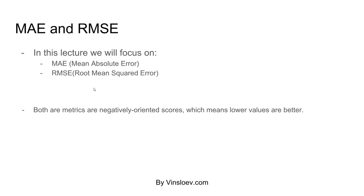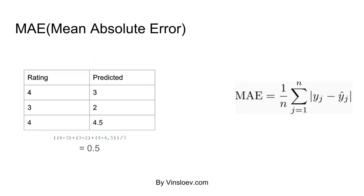If we can achieve a score of 0 for all examples, we would most likely have one of the best algorithms in the world. That is of course a dream scenario, but that is what we are aiming for. Now we will learn how we can calculate these scores based on some numbers that we have.